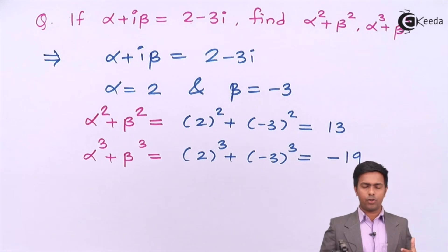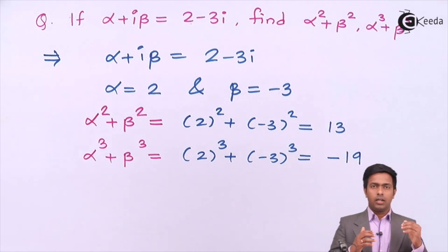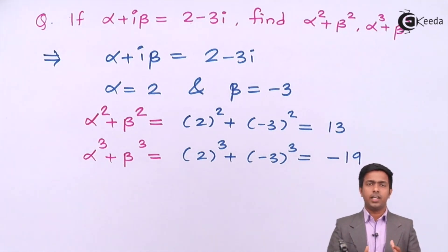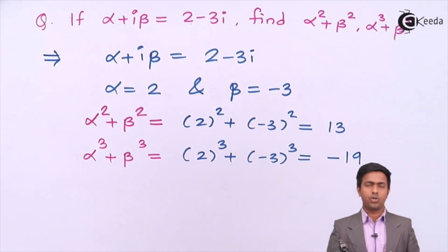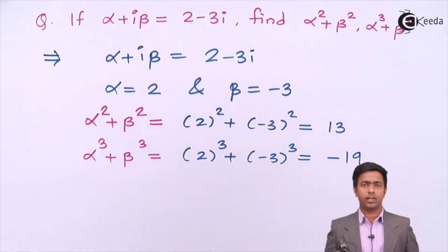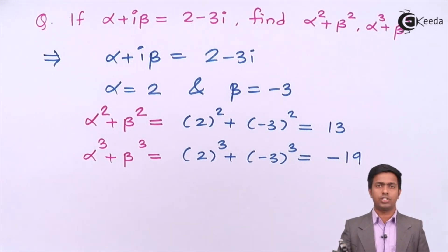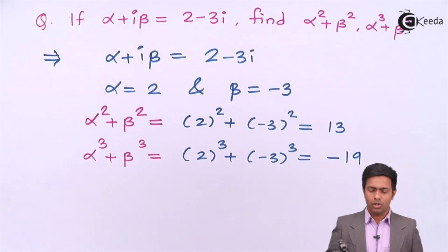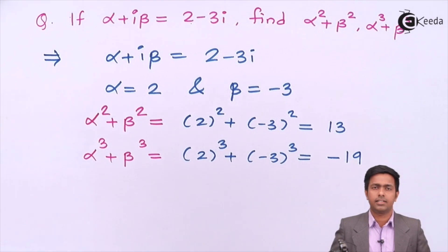So that is the value of alpha squared plus beta squared, and alpha cubed plus beta cubed. In the next video we will see more numericals based on the equality of complex numbers and other concepts of complex numbers. Keep watching the videos to learn complex numbers and mathematics in detail. Thank you.